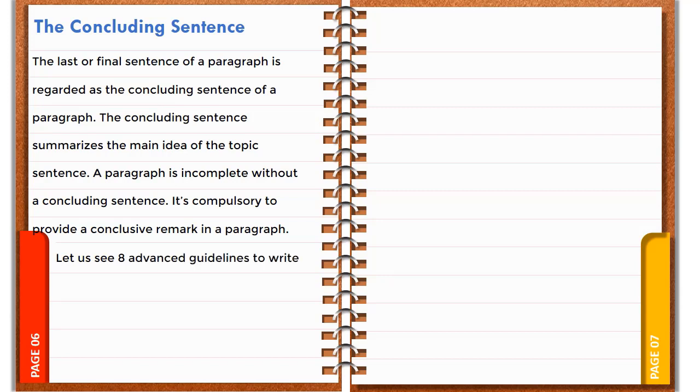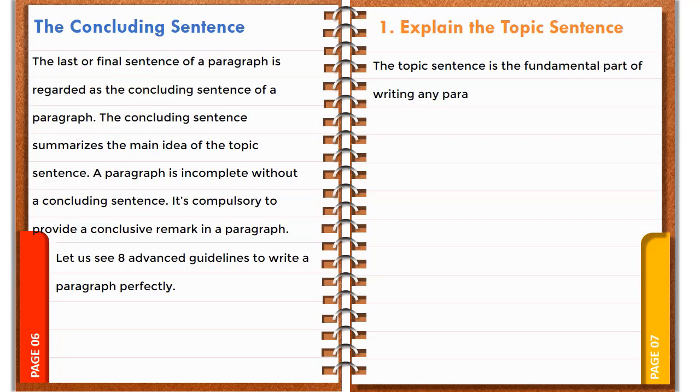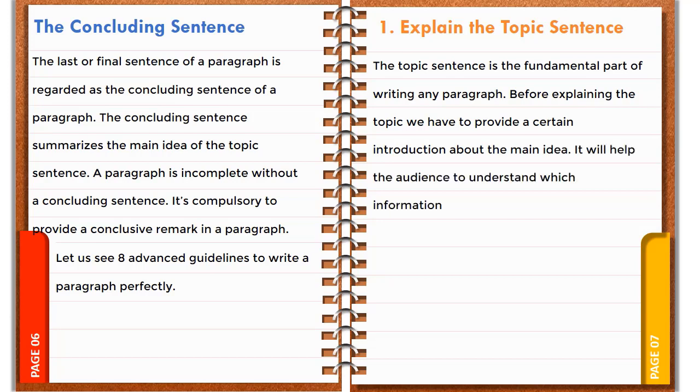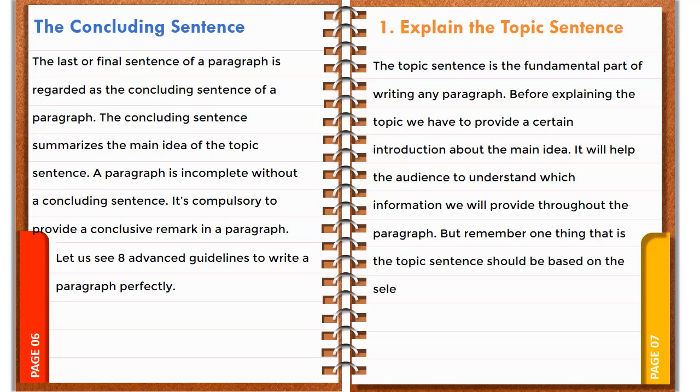Let us see 8 advanced guidelines to write a paragraph perfectly. Number 1: Explain the Topic Sentence. The topic sentence is the fundamental part of writing any paragraph. Before explaining the topic, we have to provide a certain introduction about the main idea. It will help the audience to understand which information we will provide throughout the paragraph. But remember one thing: the topic sentence should be based on the selected topic.